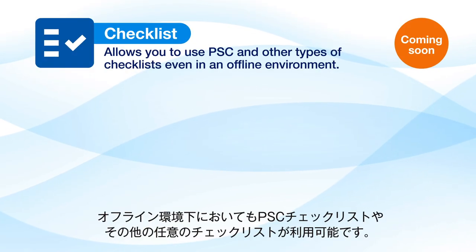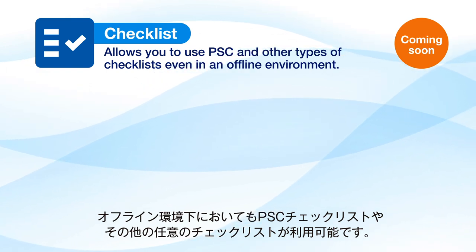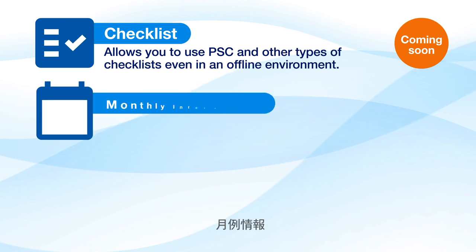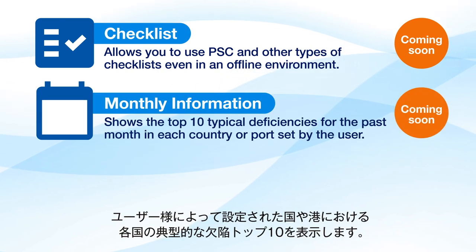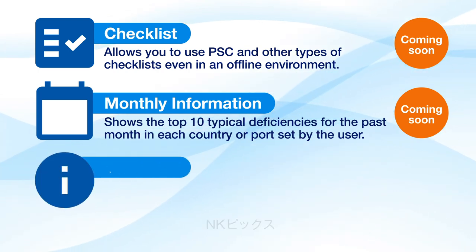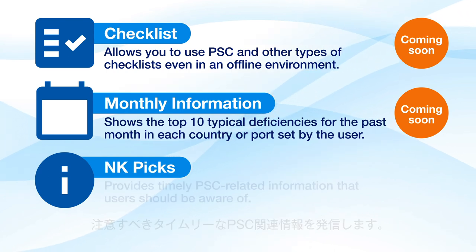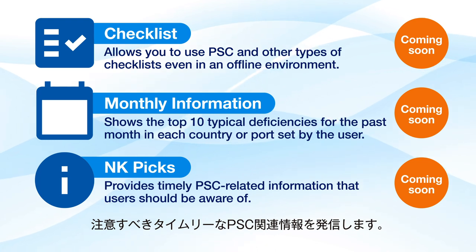Checklist allows you to use PSC and other types of checklists even in an offline environment. Monthly Information shows the top 10 typical deficiencies for the past month in each country or port set by the user. NKPICS provides timely PSC-related information that users should be aware of.